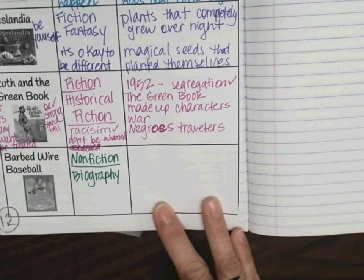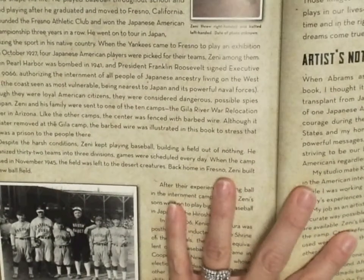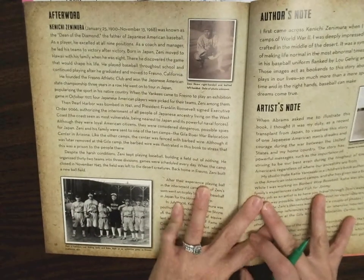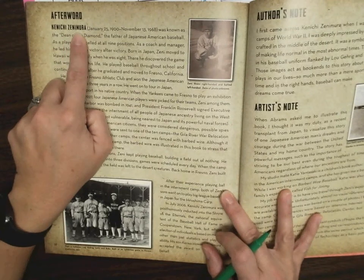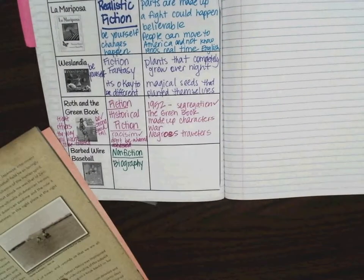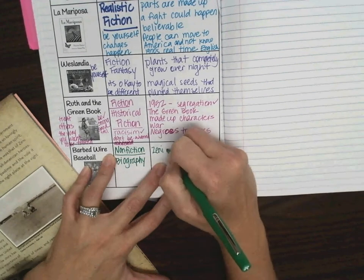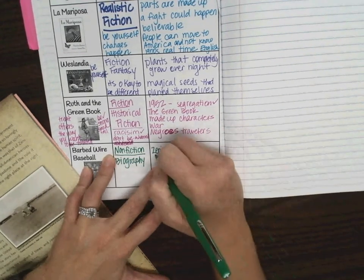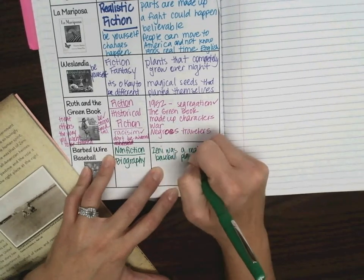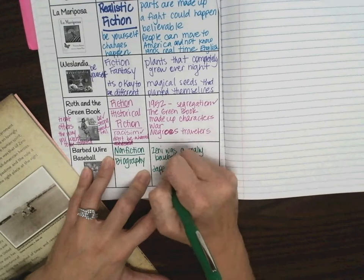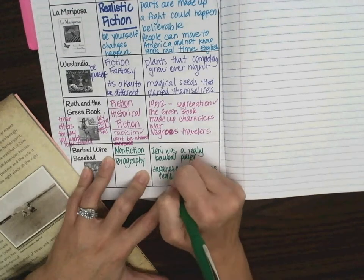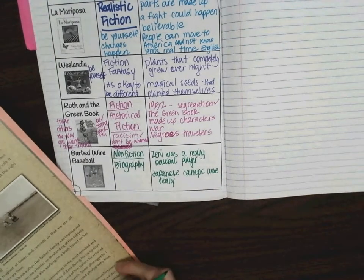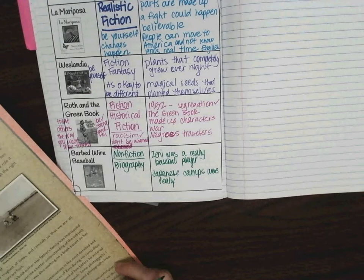And we know that this is a biography, because first of all, it has an afterword in the back, which is actually telling you truth. Kenichi Zenimura, I don't know if I'm saying that right. I'm really bad with names. He was a real person. So, Zenny was a real baseball player. The Japanese camps were real. Pearl Harbor was real. Zenny really played with Babe Ruth.